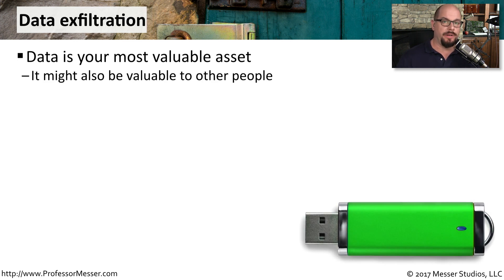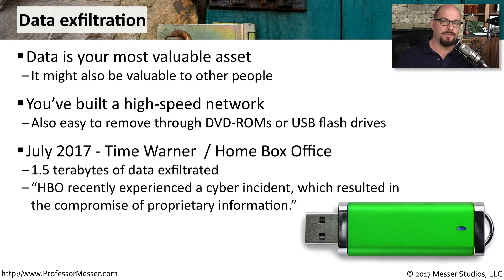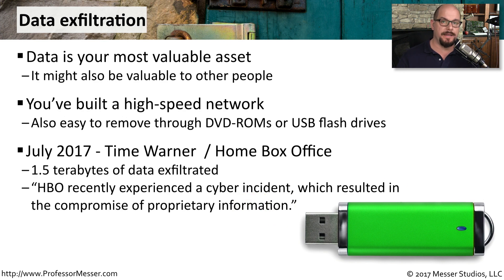The data that we have stored in our organization is extremely valuable — not only to us, but this data could be valuable to someone else. The bad guys want to exfiltrate it to the outside of your network. They can use the existing high-speed internet connection, but we've also seen cases where people will store this information on DVD-ROMs or flash drives and simply walk it out of the building. One exfiltration that appears to have occurred across the network happened in July of 2017 with Time Warner and their Home Box Office division, where 1.5 terabytes of data was exfiltrated, appearing to contain a number of programs and series on HBO. HBO commented that they recently experienced a cyber incident which resulted in the compromise of proprietary information.